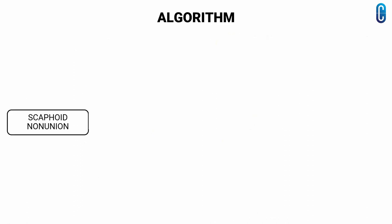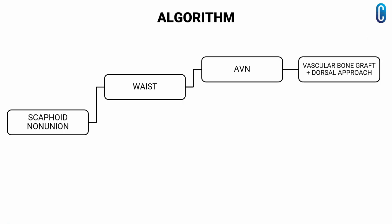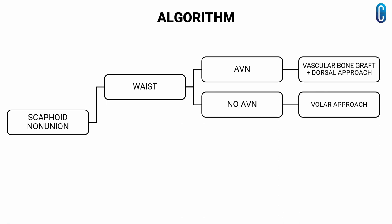This is an algorithm for the treatment of scaphoid nonunion. In the case of a scaphoid nonunion through the waist with avascular necrosis, the preferred management is vascular bone graft via a dorsal approach. If there is no avascular necrosis, a volar approach is used and bone grafting is performed.